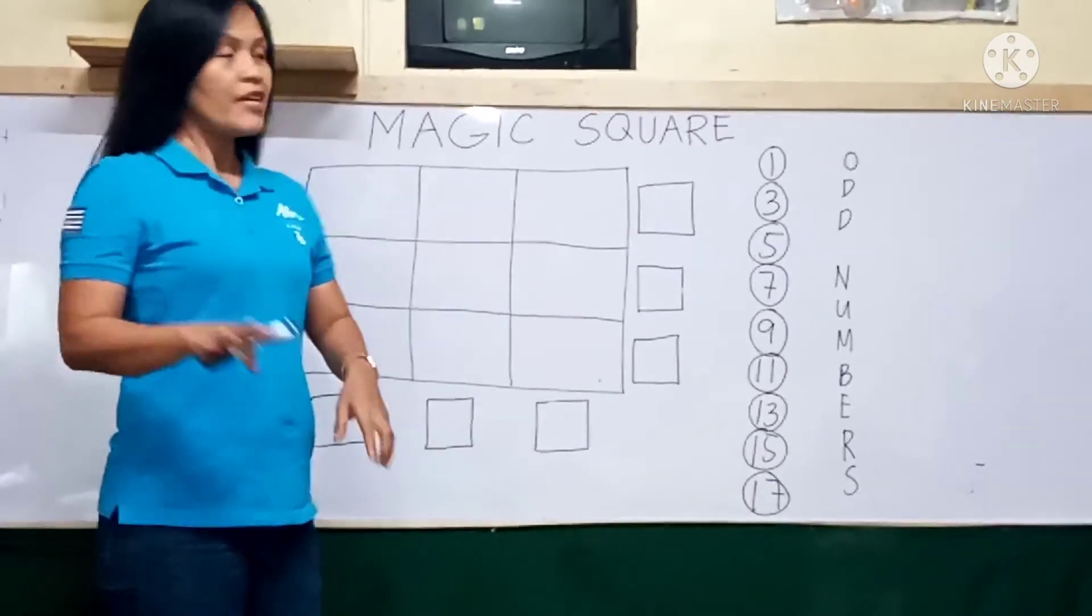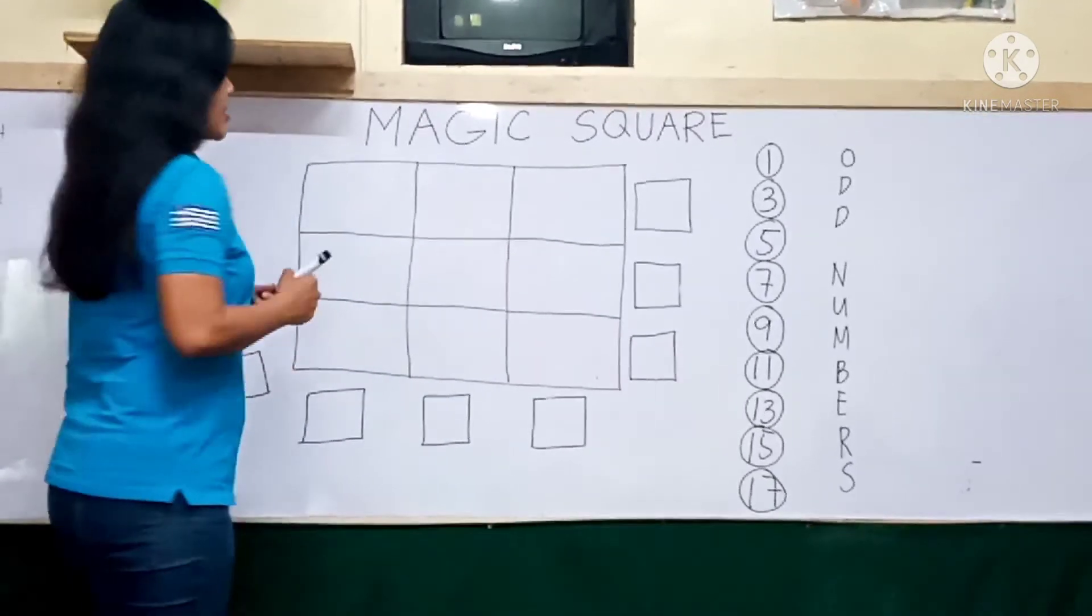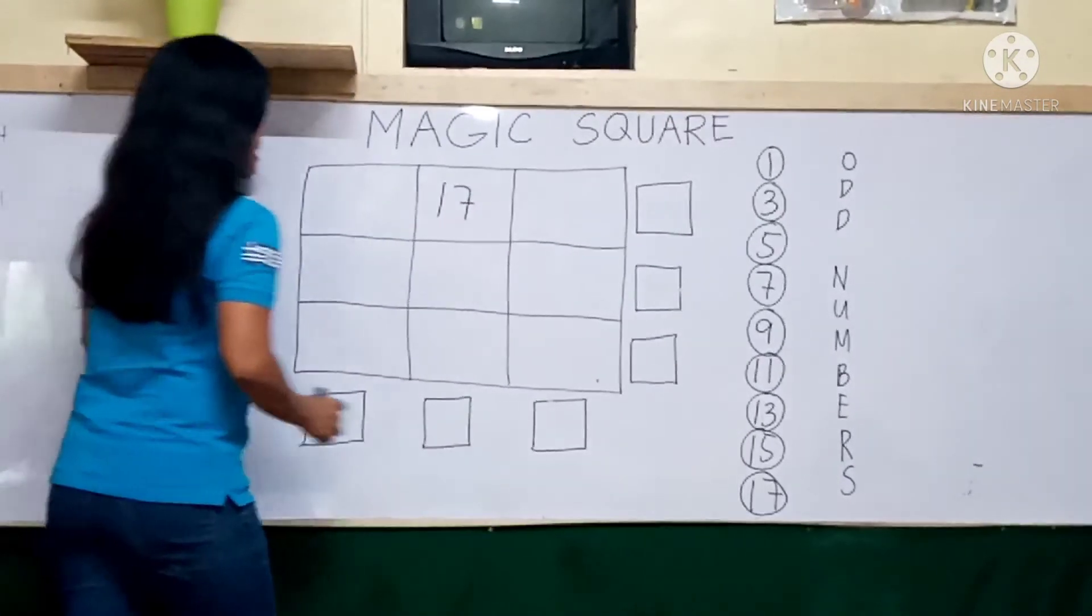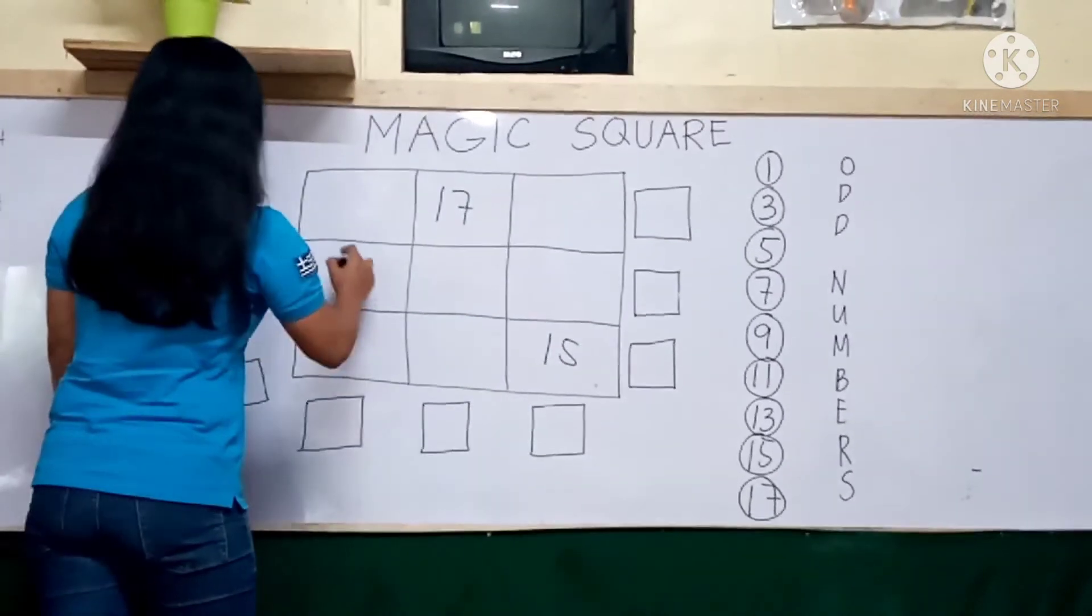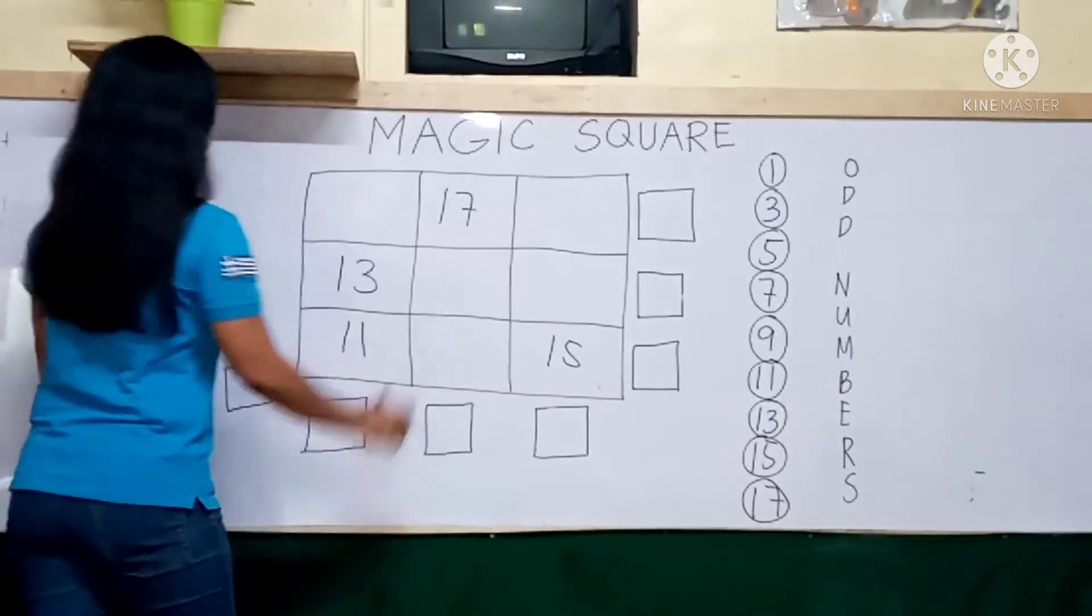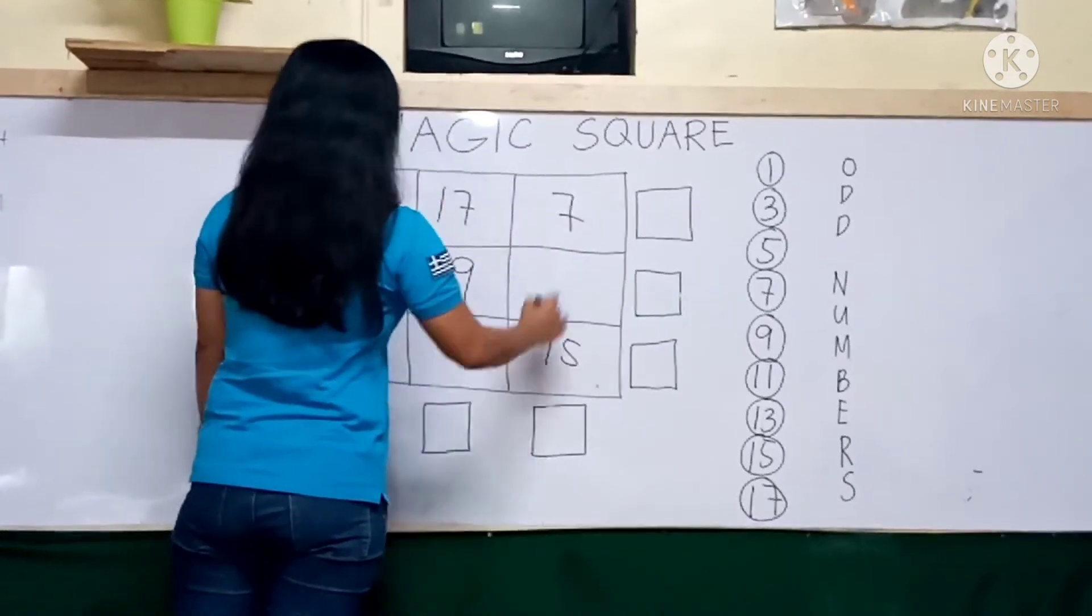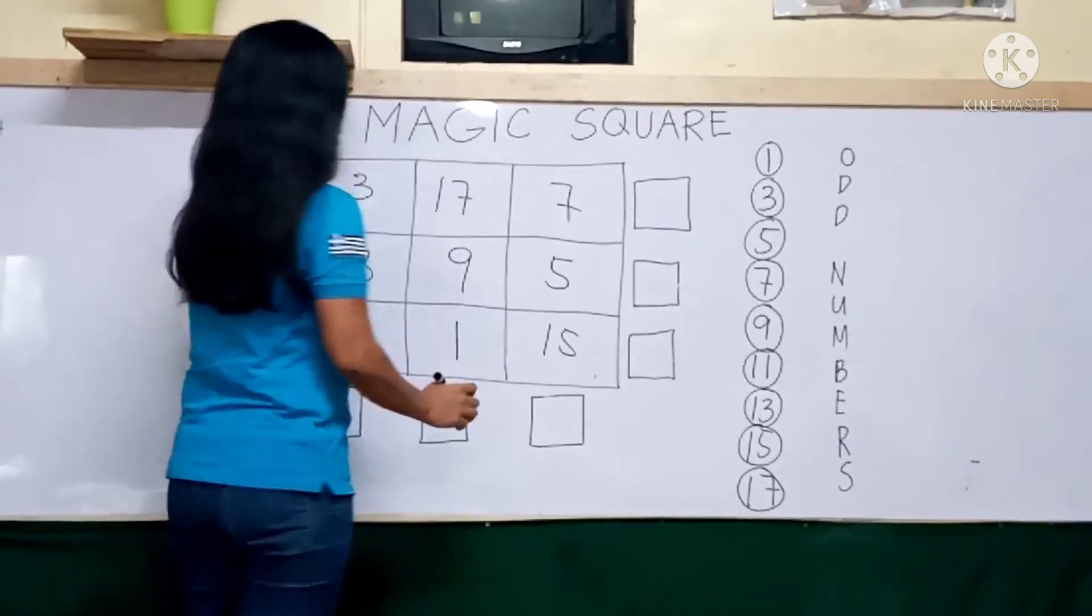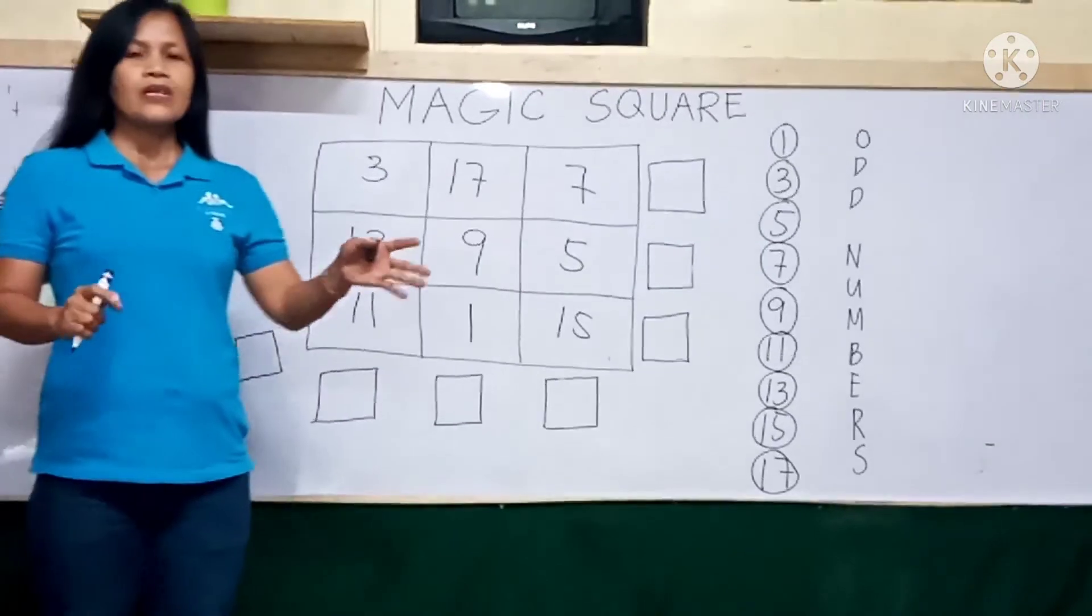Now, let me put these numbers respectively in decreasing order. First, 17 in the first row, 15, 13, 11, then 9, 7, and then 5, 3, and 1. And let us see if the sum changes.